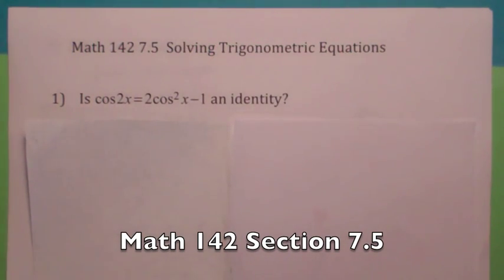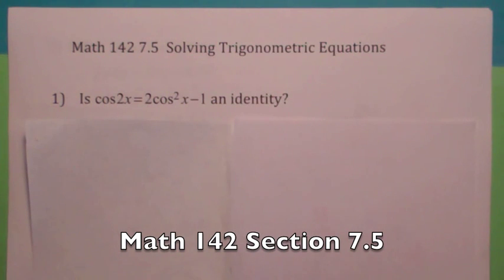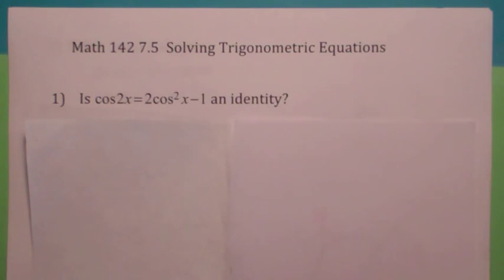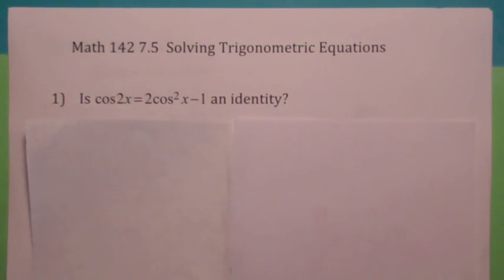You've already looked at solving trigonometric identities. In this section, we're going to look at solving trigonometric equations. Not every equation is an identity. Is this first one an identity? Is it true that cosine 2x equals 2 cosine squared x minus 1? Well, it means that it has to be true for all x for which the equation is defined — so no matter what you plug in for x, both sides should be equal.